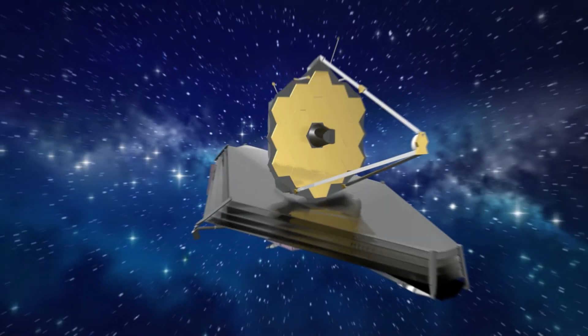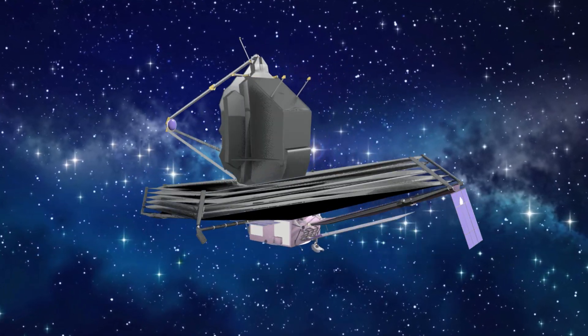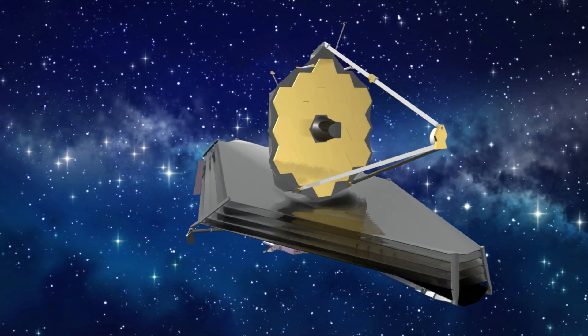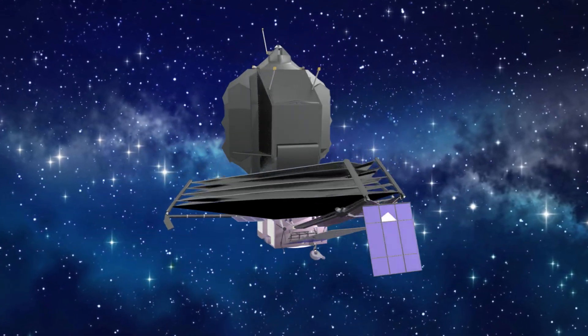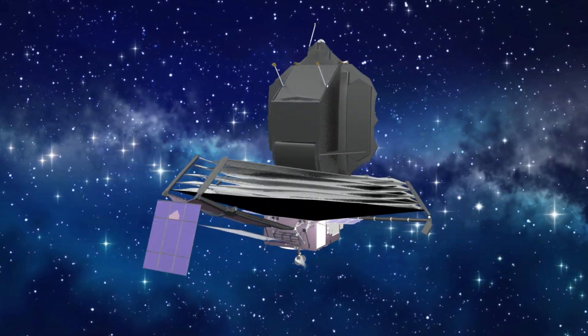Now comes the James Webb Space Telescope, which has infrared vision. Only infrared light can identify objects with redshifts of 11 and above.